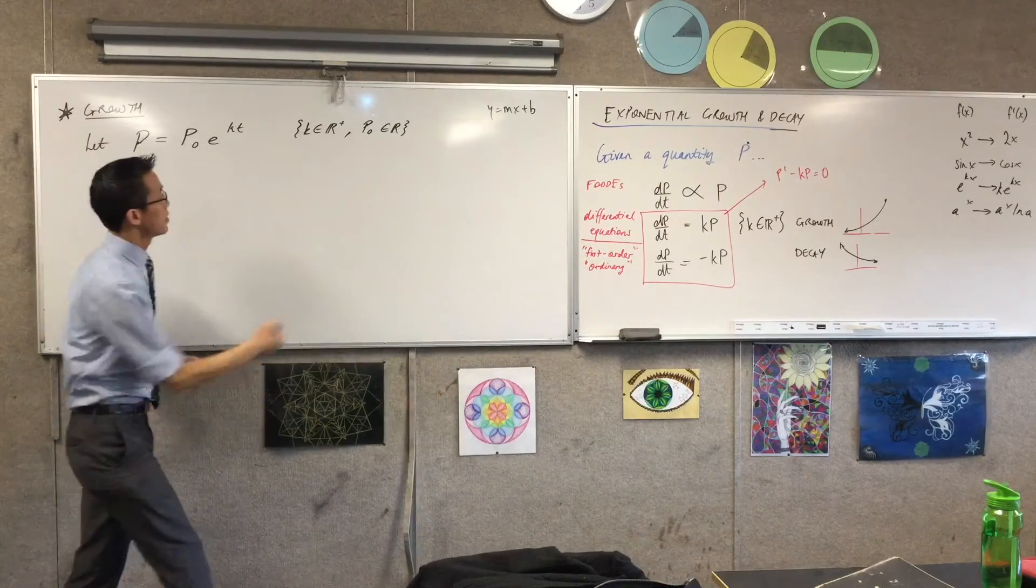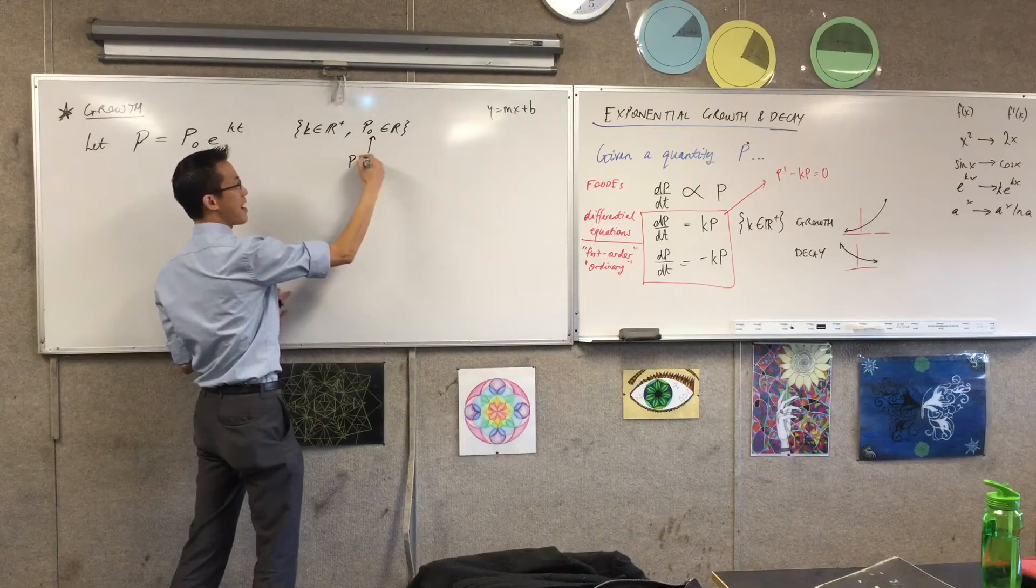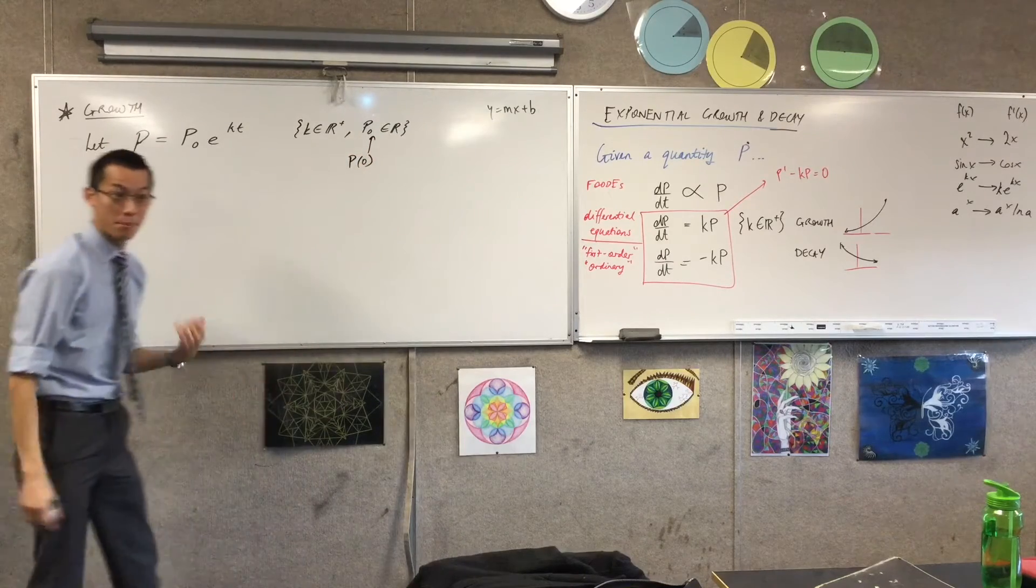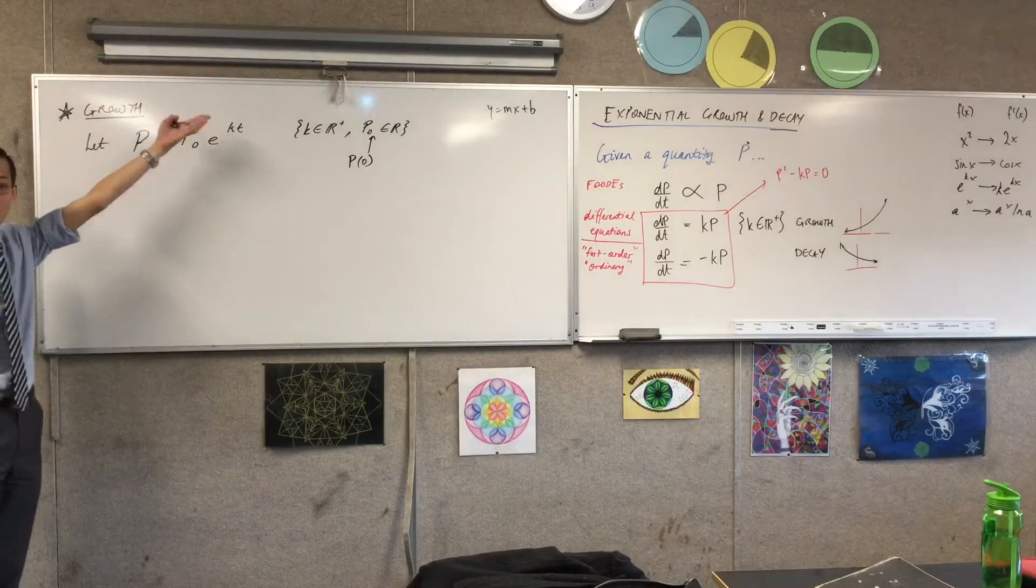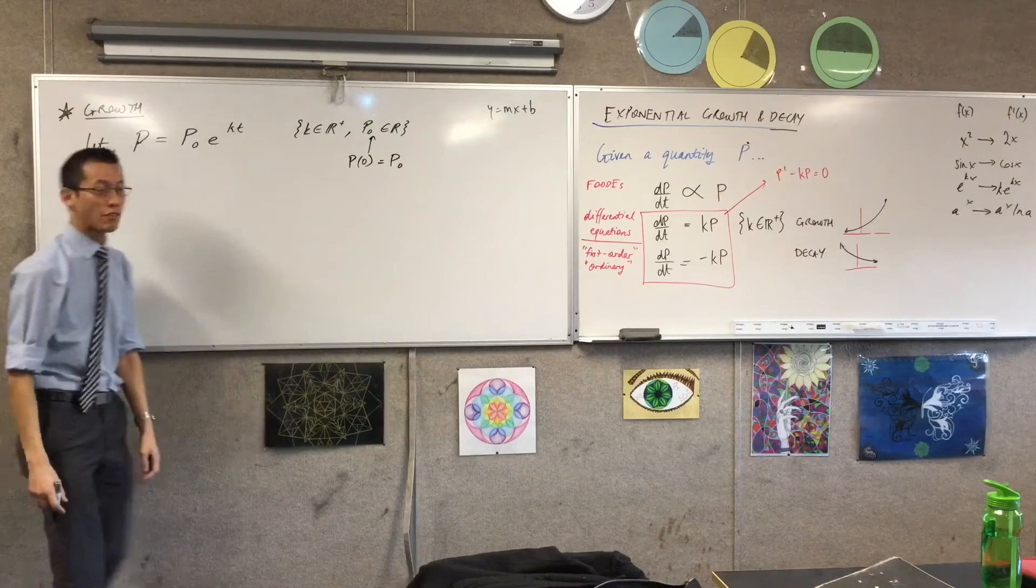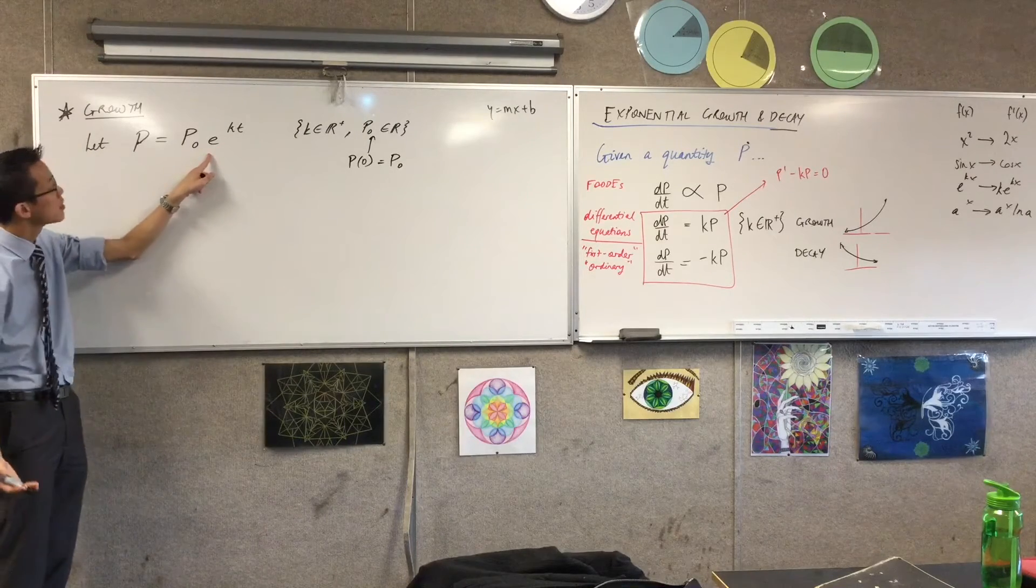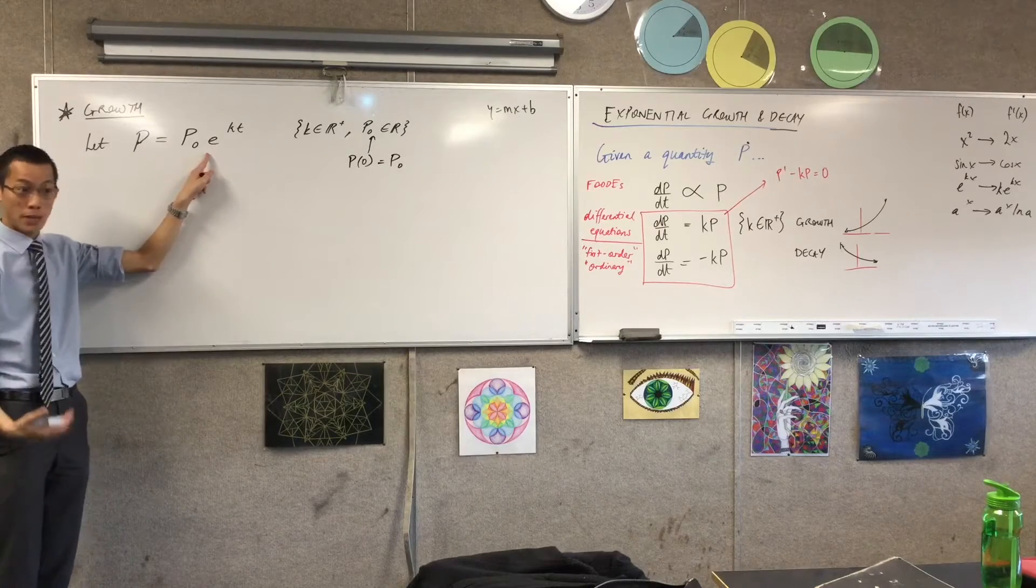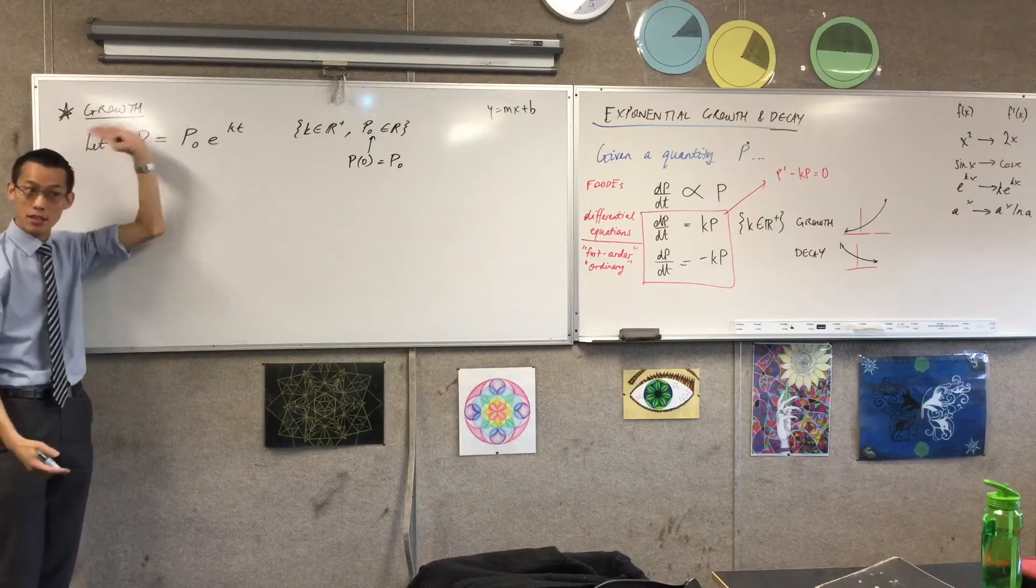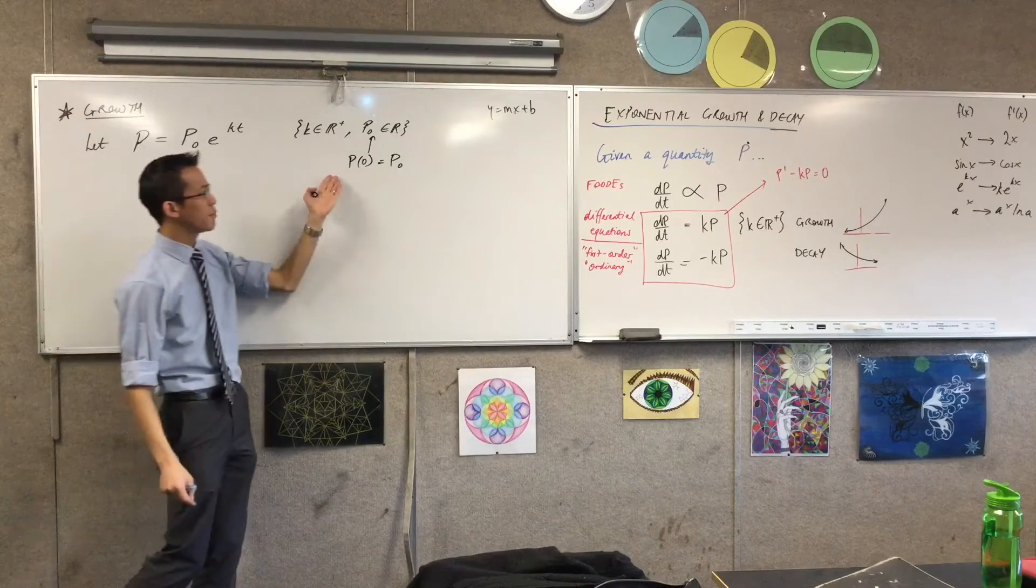I suppose another way you could write this is that, and this is why it's called P0, P at 0. If I put in T time equals 0, that's going to equal P0, because what happens to this part here, the exponential part, when time is 0? It just becomes 1. E to the power of 0, anything to the power of 0, is just 1. So you just get left with this guy. So that's why we designate him P0.